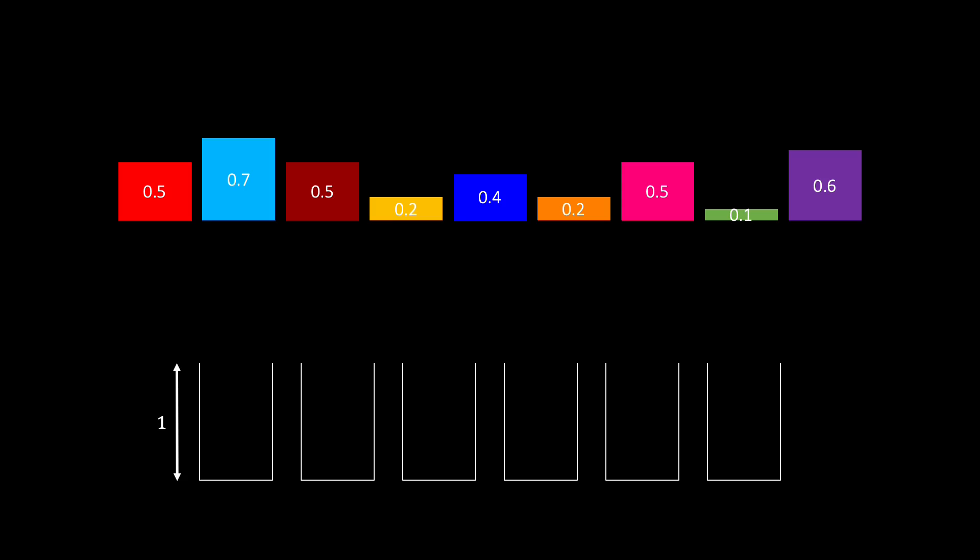First we try a simple approach called first fit. The items are considered in whatever order, and they are placed into bins one by one. We place each item in the leftmost bin that it fits into.